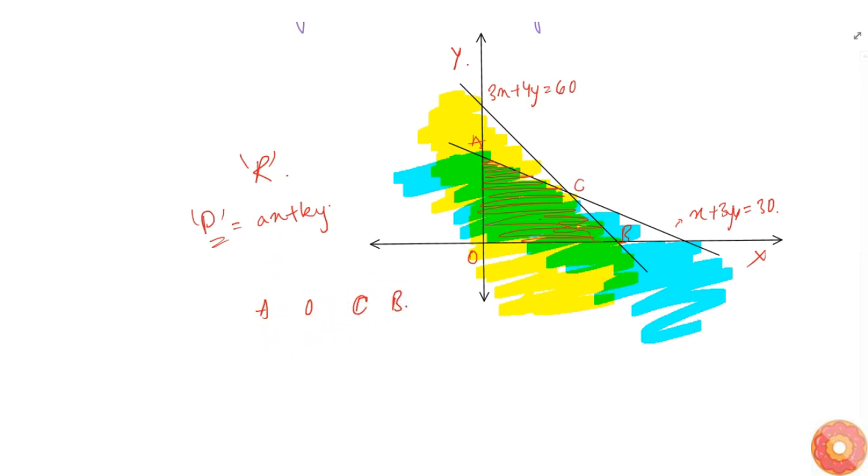So at each point. Let's try to note what is profit we get. A point is simply if this is A 0 comma 10. Then this C is intersection of both points. That is 3X plus 4Y equal to 30.